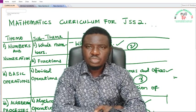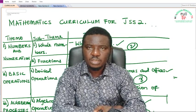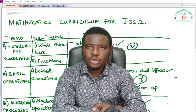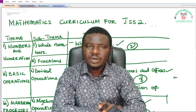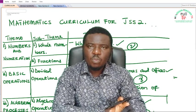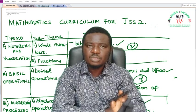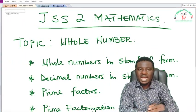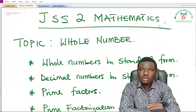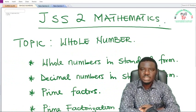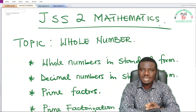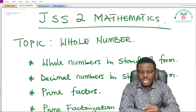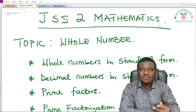Whole numbers in GSS2 is a continuation of the whole numbers you did in GSS1. At the GSS1 curriculum you were exposed to counting, reading and writing of whole numbers into millions, billions and trillions. In GSS2 we shall be looking at this subtopic under whole numbers — a continuation of what you did in GSS1. In GSS1 you were exposed to larger numbers: billions, millions, trillions, while in GSS2 you'll be exposed to how to write numbers in standard form.